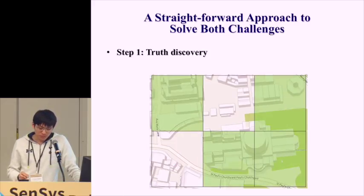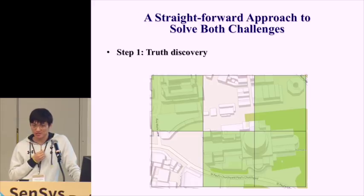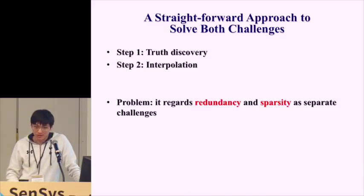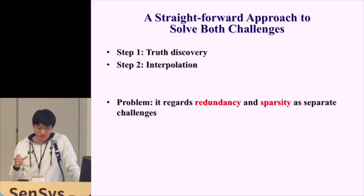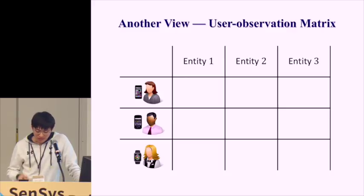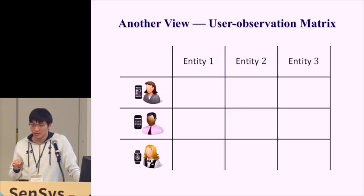A straightforward approach to solve both challenges would be a two-step process: first, use truth discovery to estimate entities with user observations; second, use interpolation for entities without observations. However, the problem with this approach is that it treats the redundancy and sparsity challenges separately.